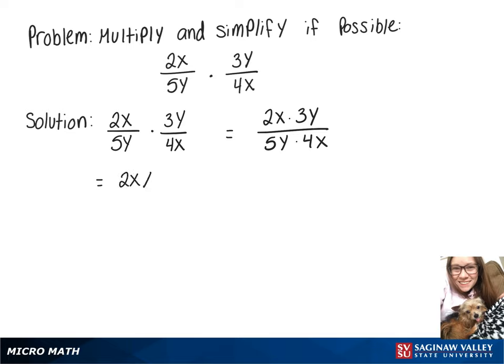And then factoring that, I know on top I can take out a 2xy times 3. On bottom, I can take out 2xy and then we're left with 5 times 2.